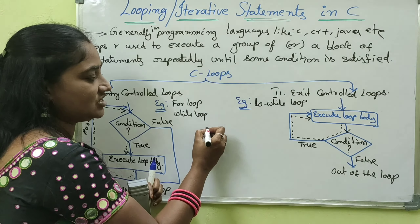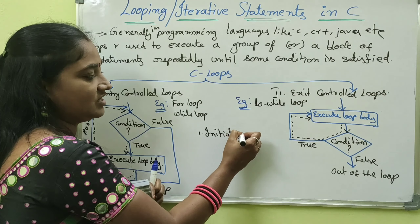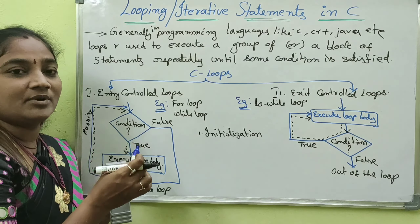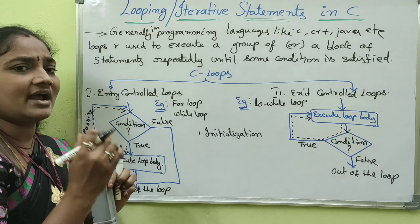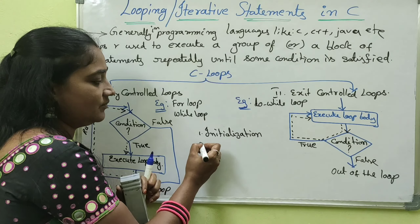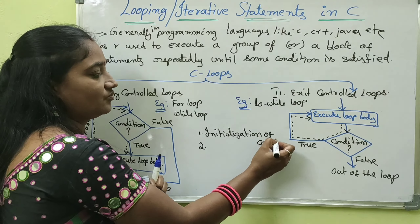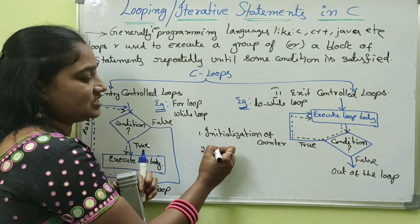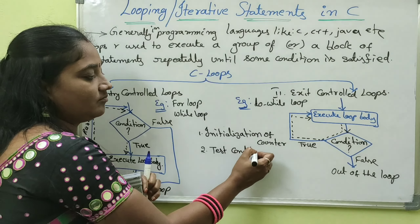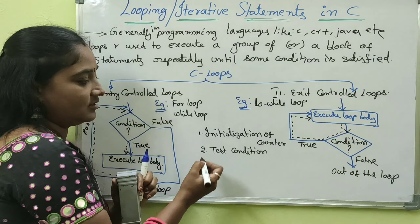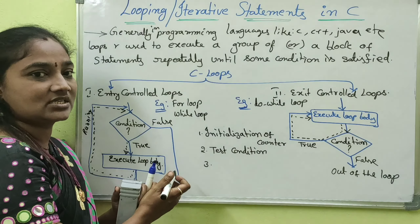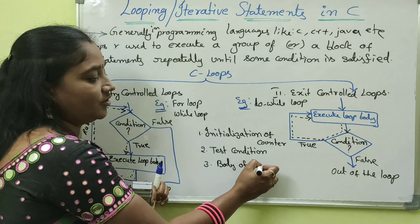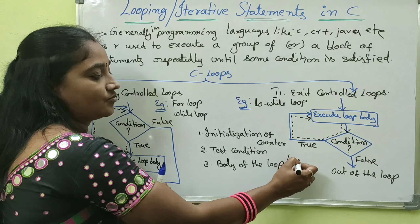The first part is initialization of the counter. The second one is the test condition — we need to check the condition. After that, we require a block of statements, which is the body of the loop — the statements to execute.